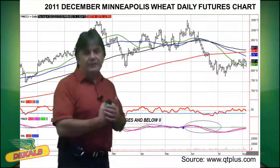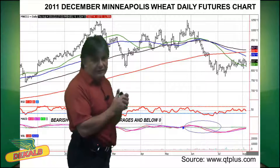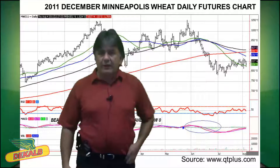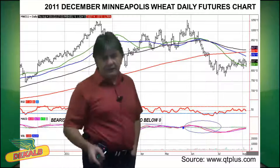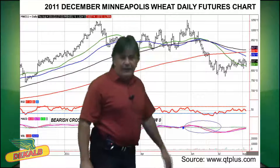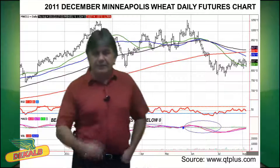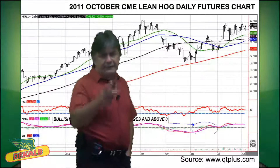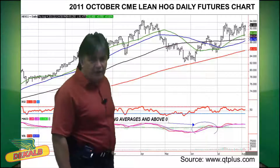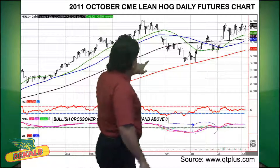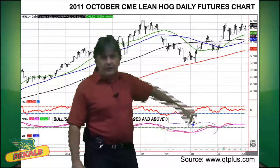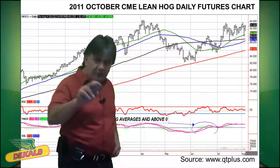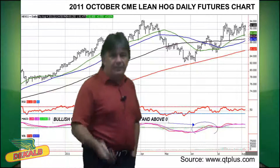Let's give you an example. This is the 2011 December Minneapolis wheat futures contract. You can see there I've circled an example where the market is peaking, all of a sudden it's starting to come down, and that MACD is starting to pick up some steam and go below zero. For a bullish MACD example, this is the 2011 October CME lean hogs futures. You can see that the MACD is starting to move up higher, crossing zero — the two lines are crossing above zero, markets moving higher, and that's a bullish sign.